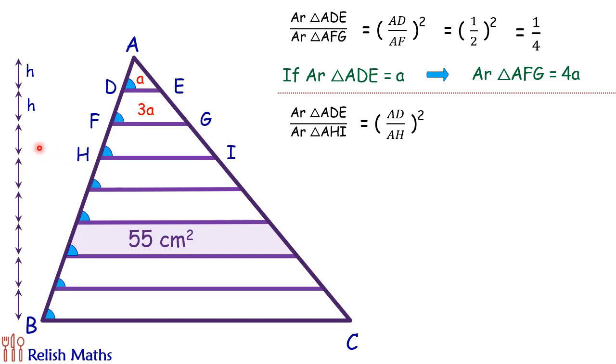Now again, this height is also h units. So total it will become 3h units, and the ratio will become 1:3. If AD is x then AH is 3x, the ratio is 1:3, and the ratio of area will be 1:9.